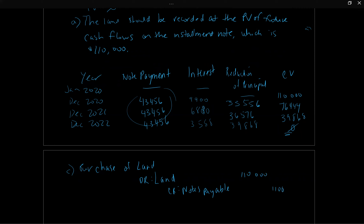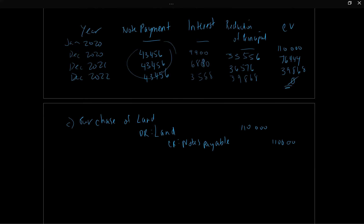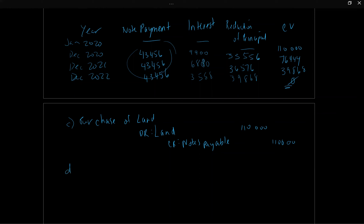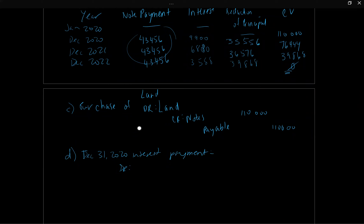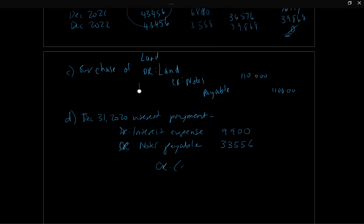Part D: the journal entry for the first installment payment on December 31st, 2020. We have all the numbers from our amortization table. We debit interest expense for $9,900, debit notes payable to reduce the principal on the balance sheet by $33,456, and credit cash for the equal blended installment of $43,456. To record subsequent interest payments, we simply take the corresponding numbers from the amortization table.